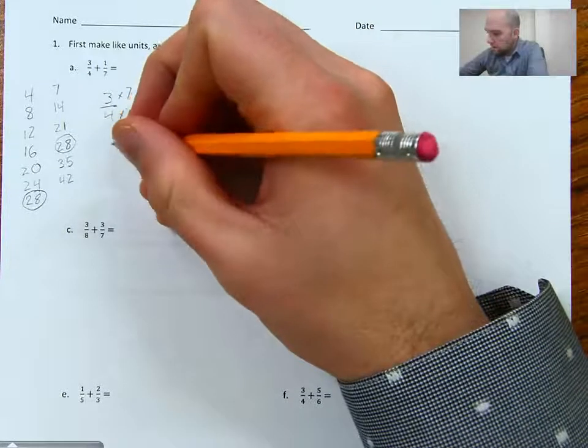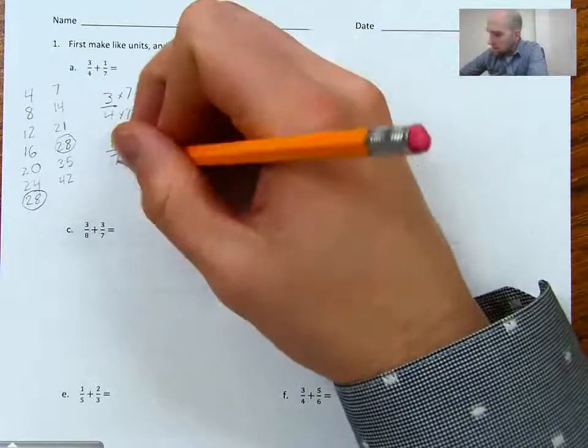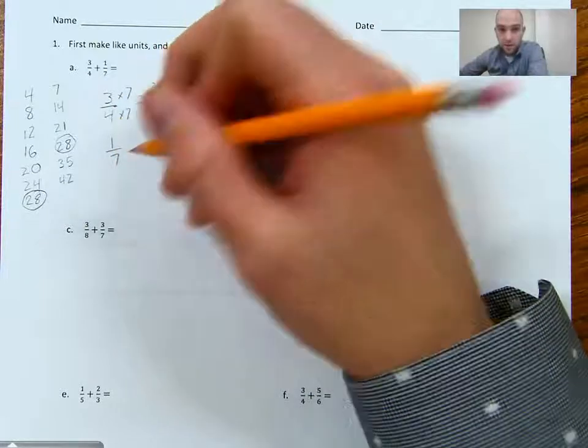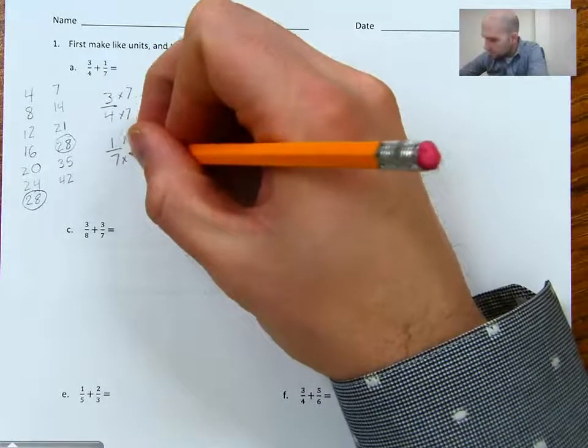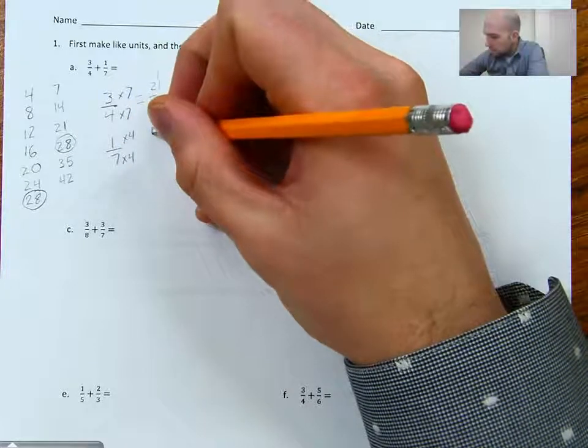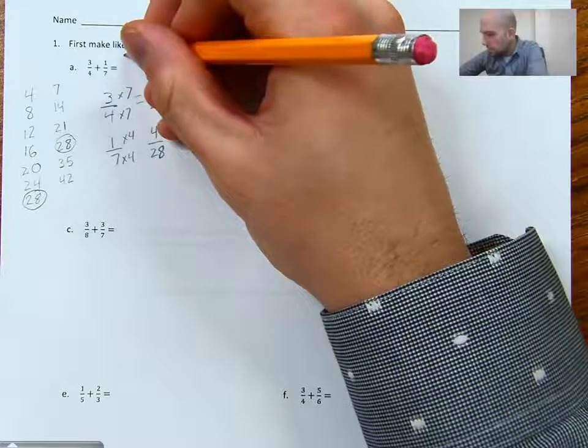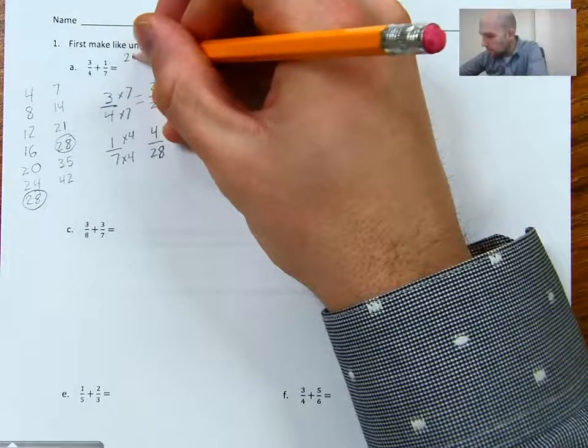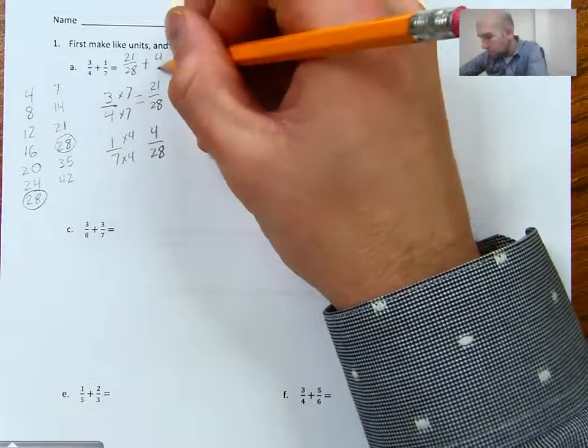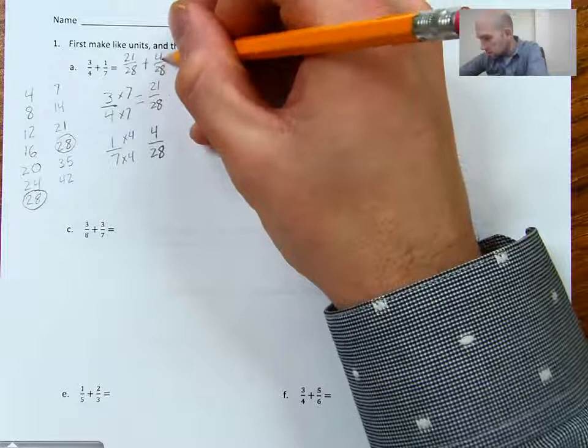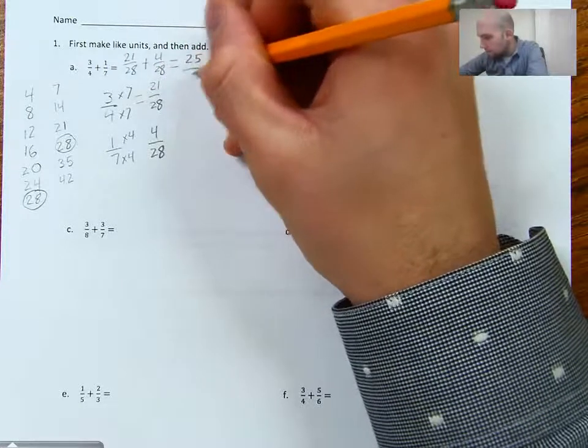And then to make 1/7, to make my denominator 28, I would need to multiply by 4. So 4 times 4, I'm going to end up with 4/28. So now I know that I'm going to add 21/28 plus 4/28. I'll end up with 25/28.